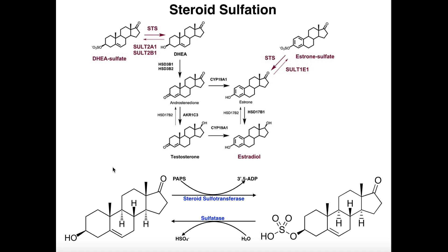But this one is a little bit different — this is what's called steroid sulfation. Recall that steroids are derivatives of cholesterol and they're generally different hormones. We're going to look at two in particular here. One is DHEA, which stands for dehydroepiandrosterone. And the other is estrone. Estrone is an estrogen — it's not the common one; the common one is estradiol — but women in particular also make estrone. It turns out that both DHEA and estrone can be sulfated.